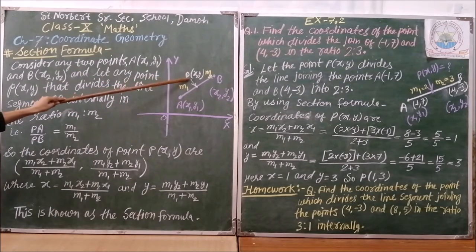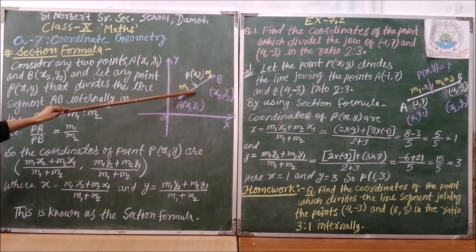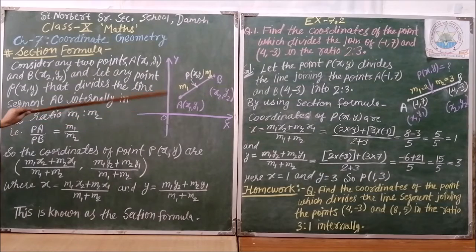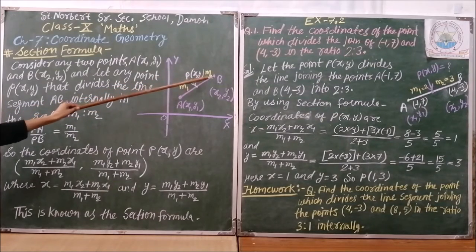And let the point P, x by y, will divide this line segment in the ratio M1 and M2. So, we will write PA upon PB equals to M1 upon M2.